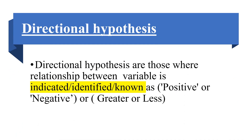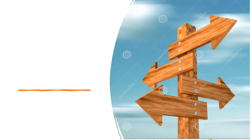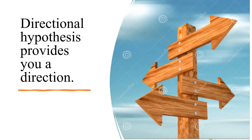What is a directional hypothesis? Directional hypotheses are those hypotheses where the relationship between variables is indicated — identified as positive or negative, or greater or less. That is, directional hypotheses are those hypotheses that provide a clear direction.